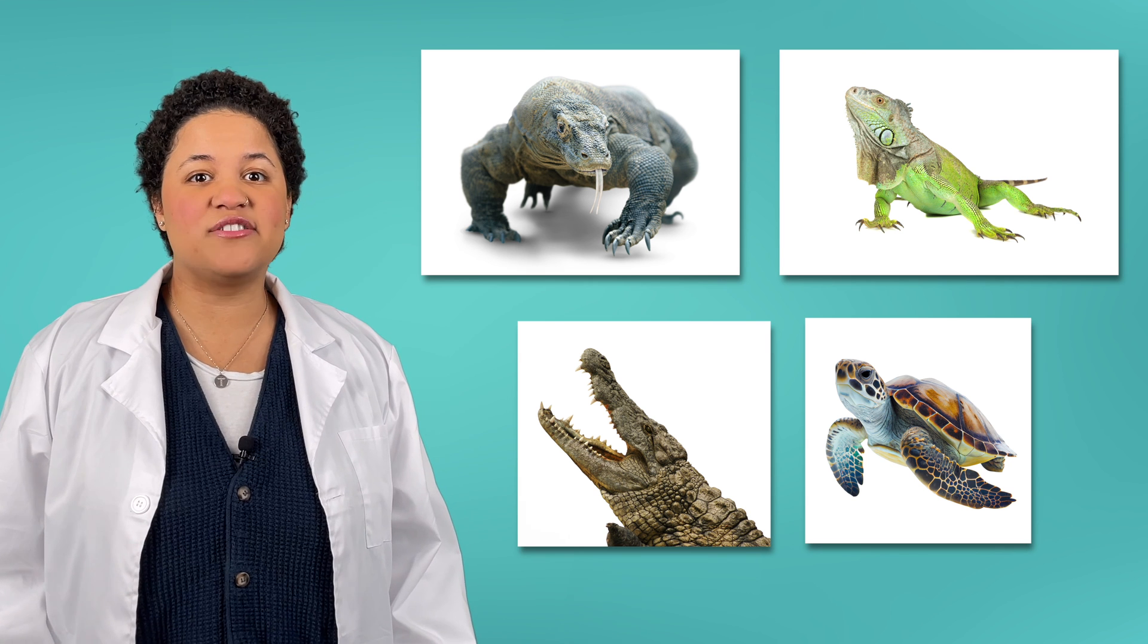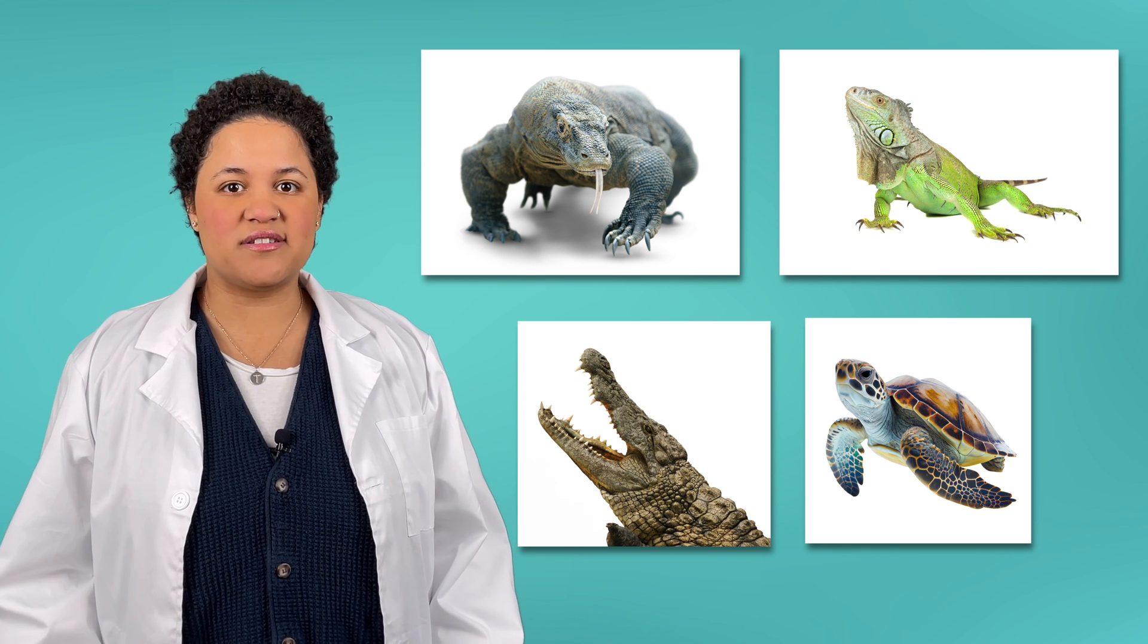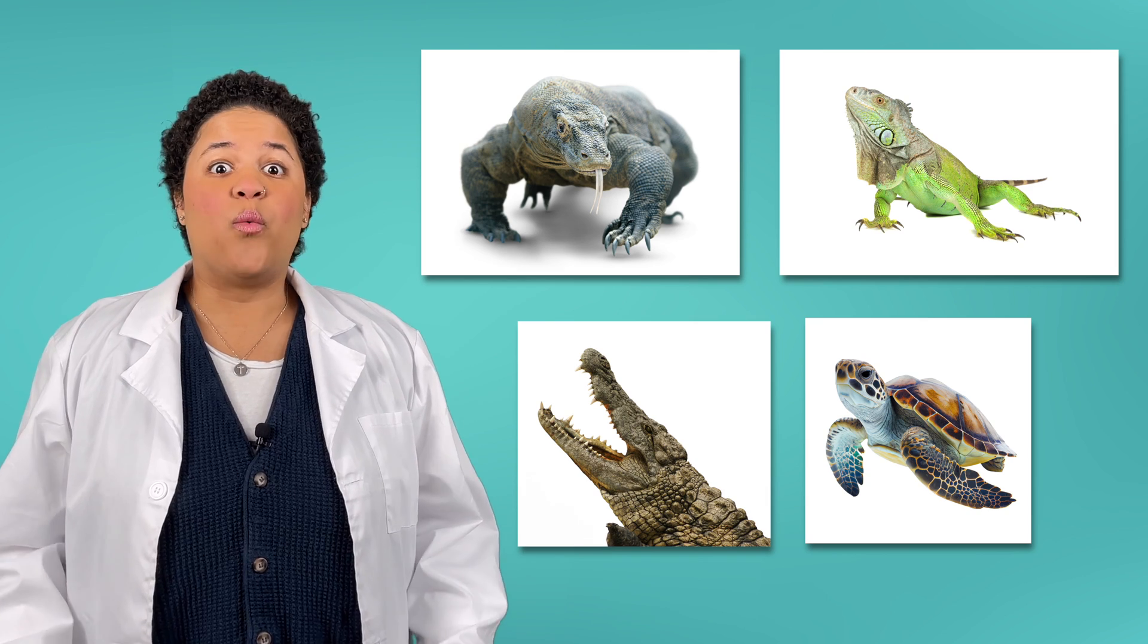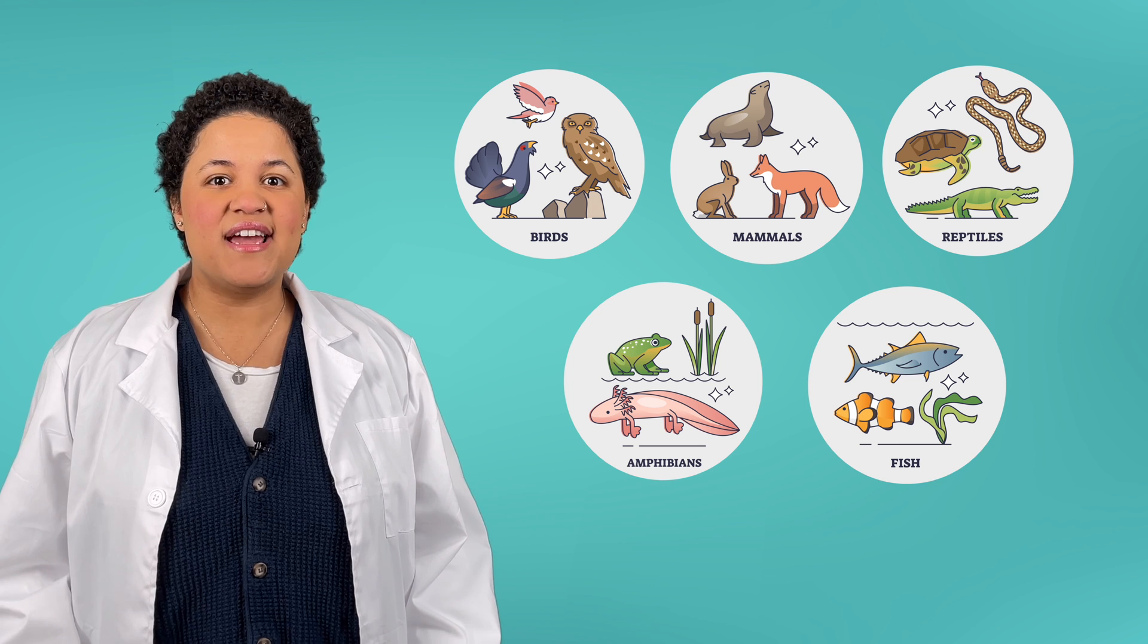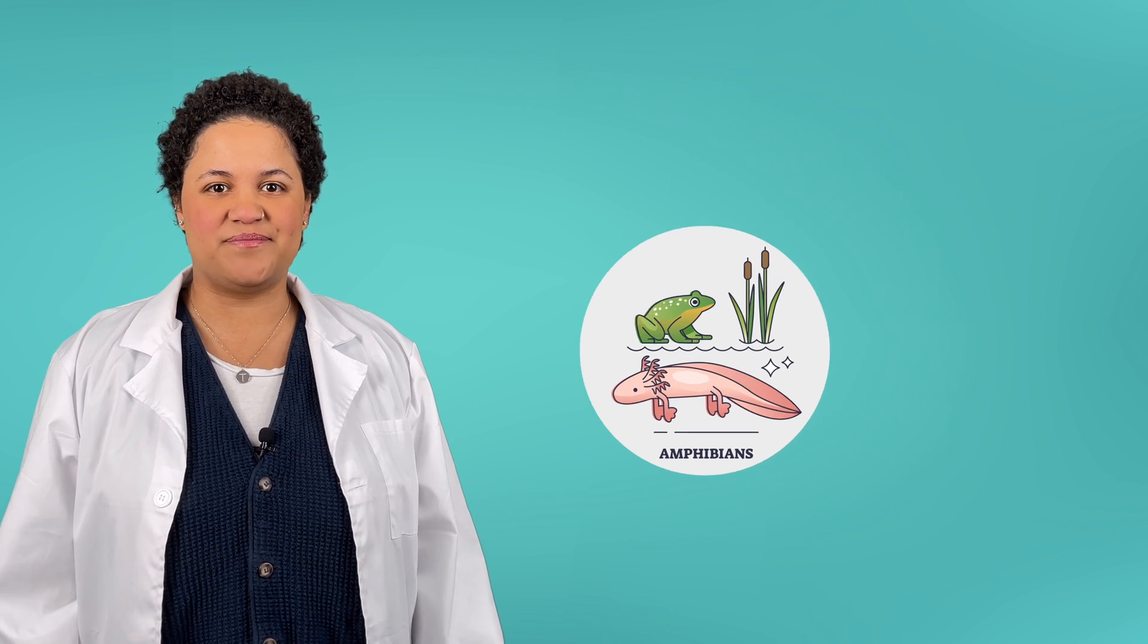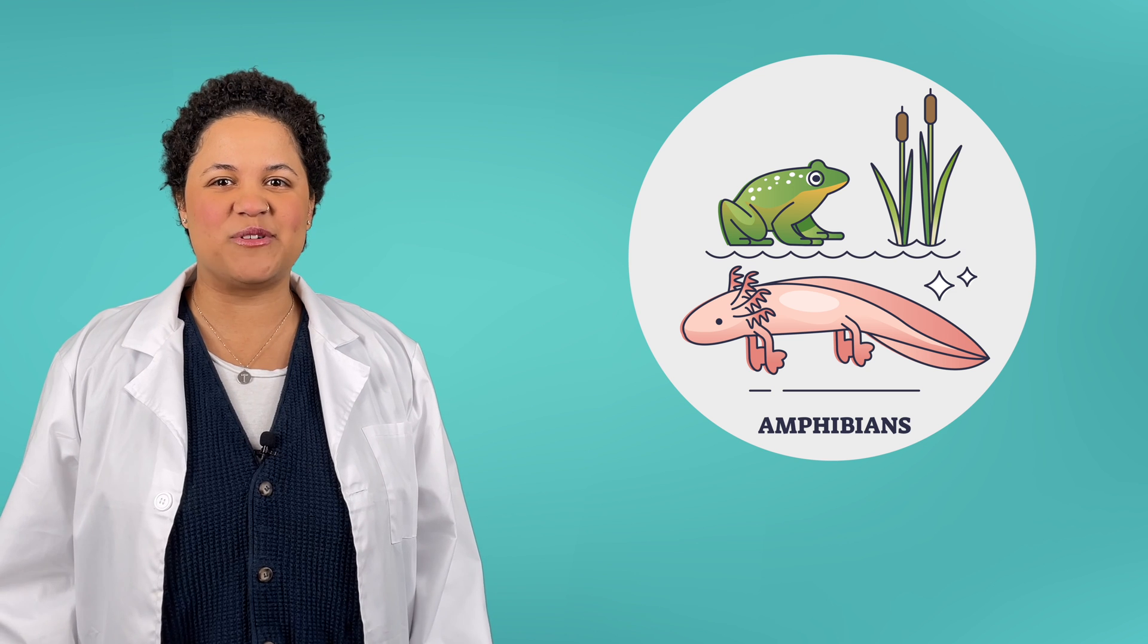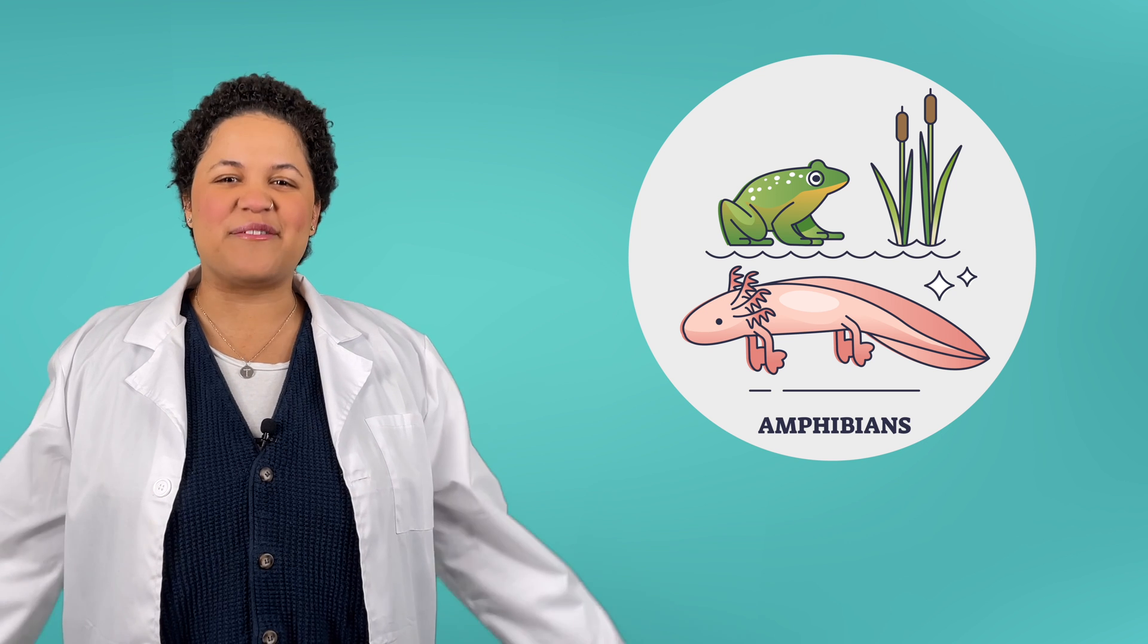Now we know reptiles are a special class of animals that have dry scales and lungs, are cold-blooded, and can lay either eggs or give live birth. Wow! It's amazing how we can think about just a few characteristics to help us sort different animals into the proper classification. And we only have one classification left to learn about. I can't wait to explore more animals next time with you. Until then, remember, science is all around you!